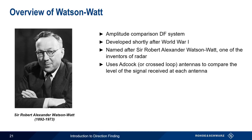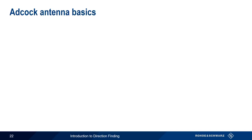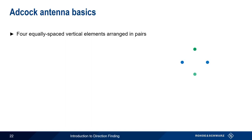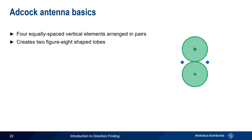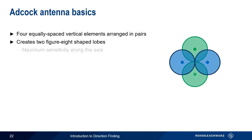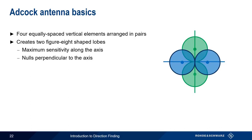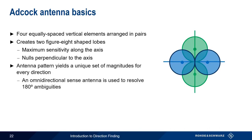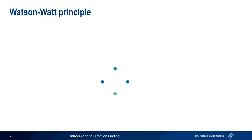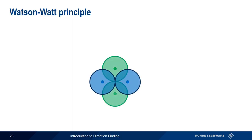Watson-Watt is the name of the methodology used to process information obtained from an ADCOCK antenna. We start with four equally spaced vertical elements arranged in pairs, creating an antenna pattern consisting of two figure-eight shaped lobes. For each of the two figure-eight shaped patterns, we have maximum sensitivity along the axis and nulls perpendicular to the axis. This arrangement yields a unique set of magnitudes for every direction, and an omnidirectional sense antenna is used to resolve any 180-degree ambiguities.